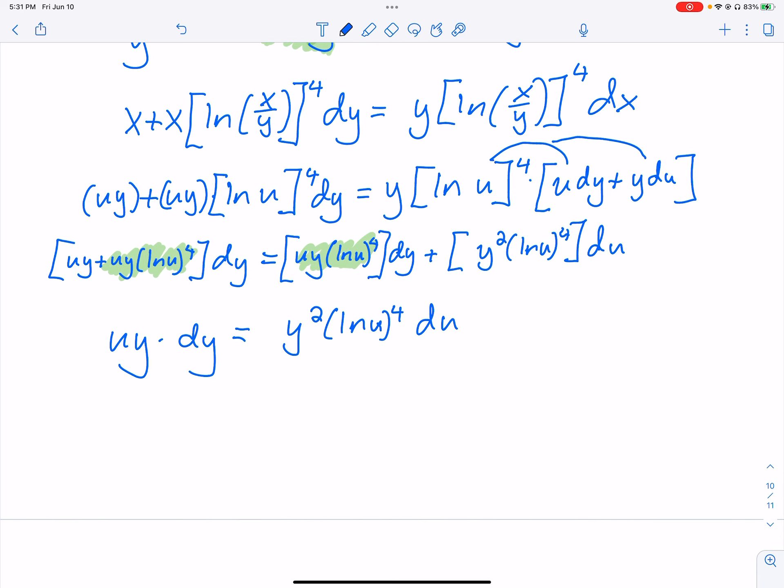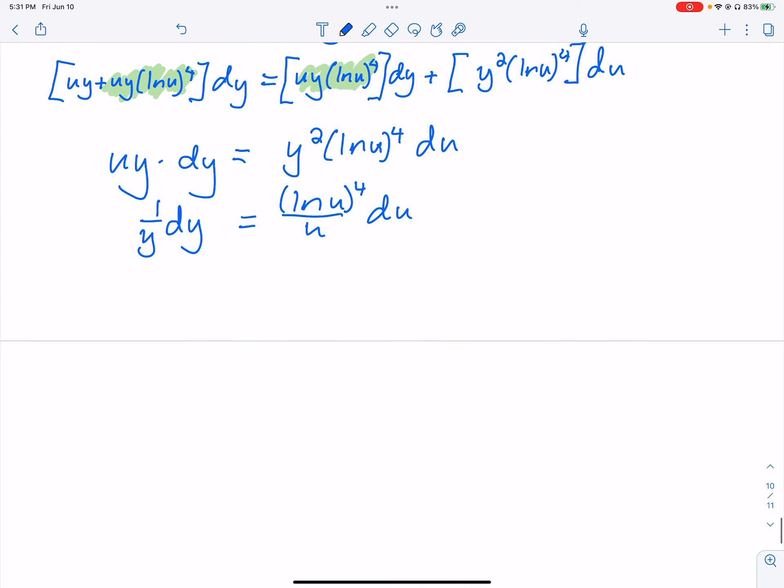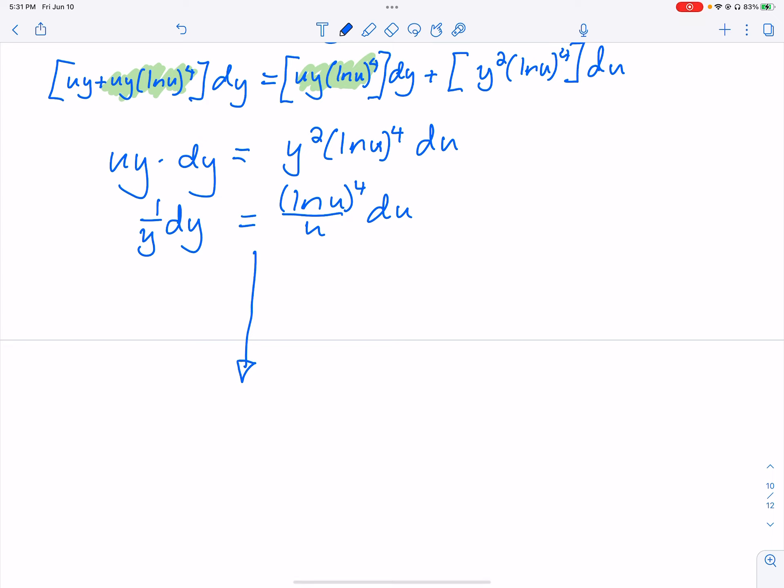We can combine our dy's. Notice that when we combine them, that ln to the fourth term is going to subtract out. So we're just going to get a u y times dy equals y squared ln u to the fourth du. We have u's and y's, and maybe we can separate. It looks like we can.